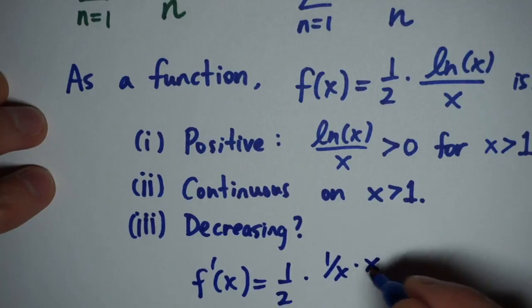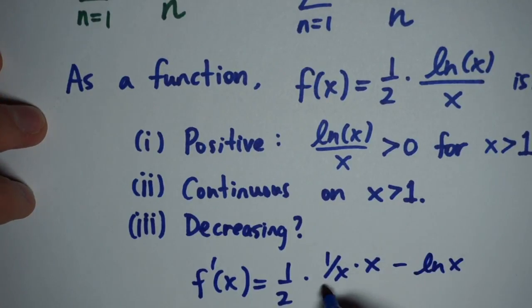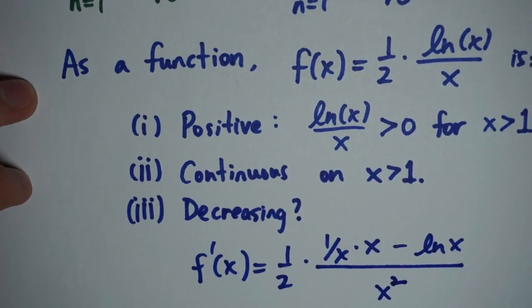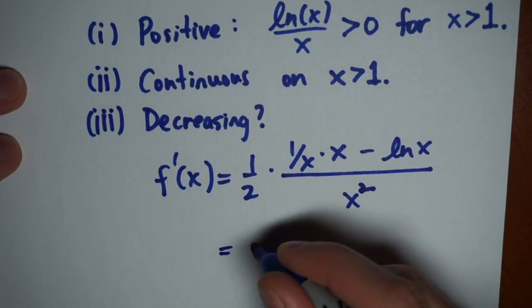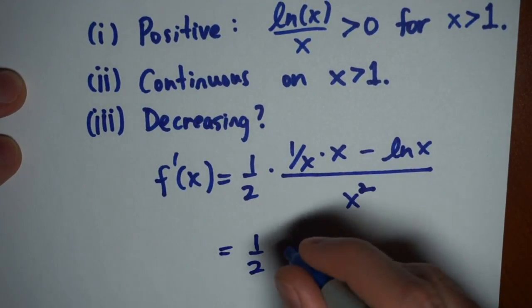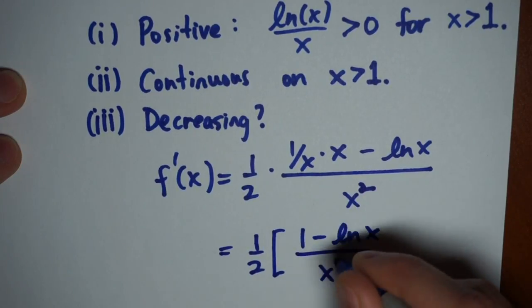So my derivative in this case, if I use the quotient rule, will be a half times one over x times x minus natural log of x, all divided by x squared. If I simplify this down a little bit, I'm going to get one-half times one minus log x divided by x squared.